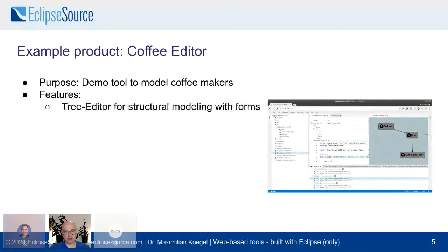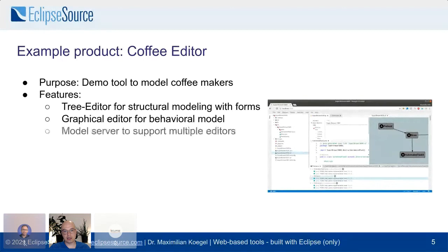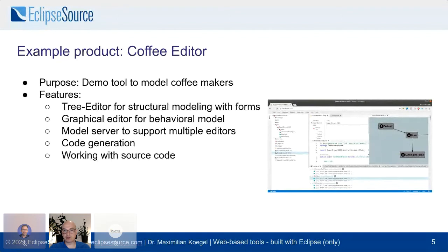The features covered include: a tree editor for structural modeling with forms; a graphical editor for diagram editing; a model server component that shows how the different editors are integrated to work on the same data at the same time, always reflecting the same state. Then I'll show code generation, working with the generated source code — editing Java and C++ — and debugging that code. Then a textual editor for a textual DSL, and finally model analysis where we run analysis on the data we've created.